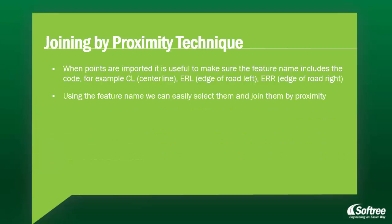We're going to first start by looking at the joining by proximity technique. When points are imported, it is useful to make sure the feature name includes the code. For example, CL for centerline, ERL for edge of road left, and ERR for edge of road right. Using the feature name, we can easily select these features and join them by proximity.